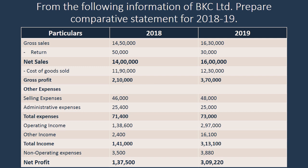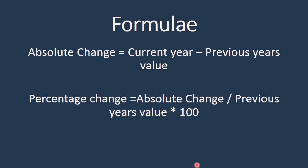In the comparative financial statement, there are two things that we want. One is the absolute change, and the second is the percentage change. The absolute change is nothing but the current year's value minus the previous year's value. So current year's net profit minus previous year's net profit — whatever difference we get from the two years' figures gives us the absolute change value. The percentage change is nothing but the absolute change divided by the previous year's value, multiplied by 100.